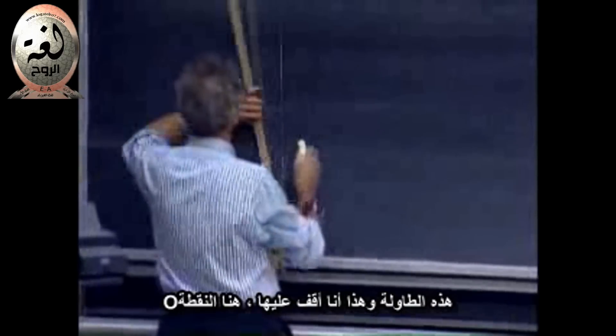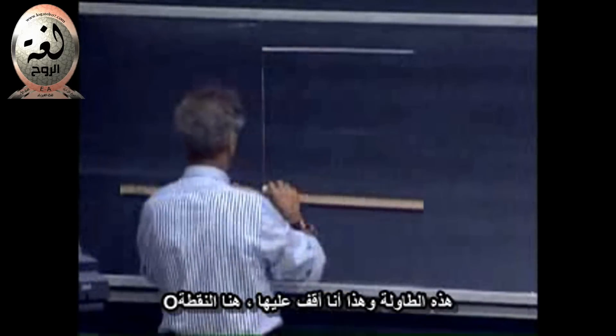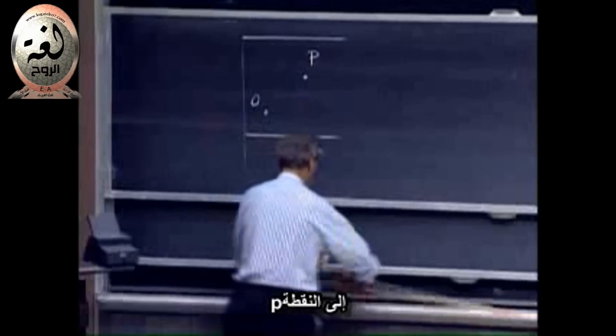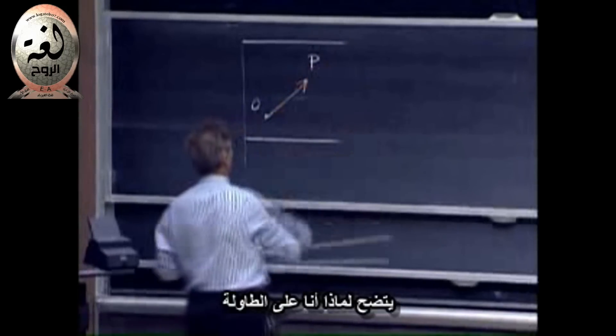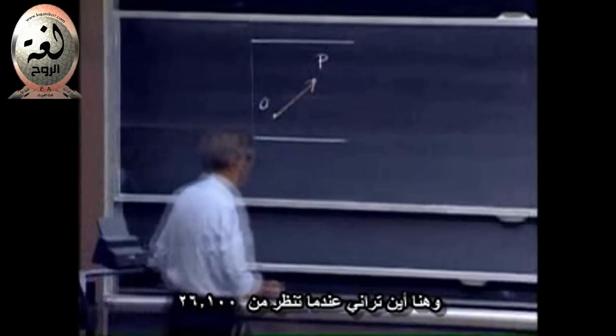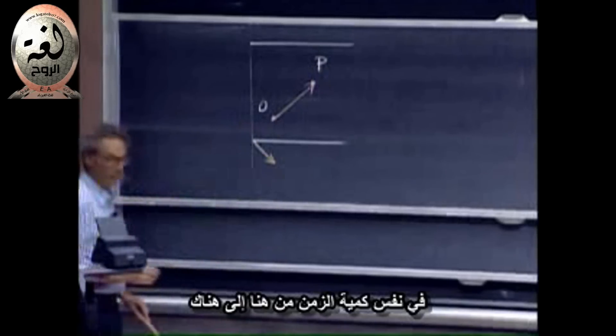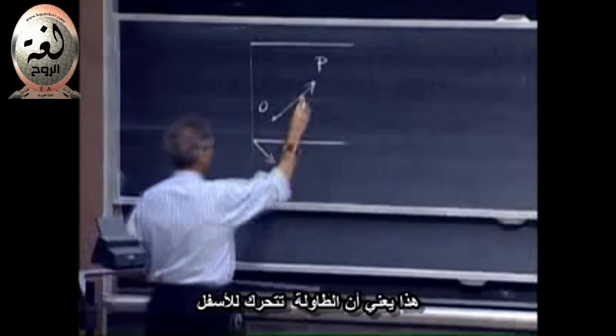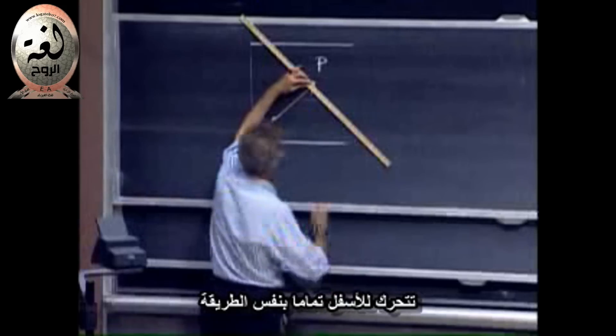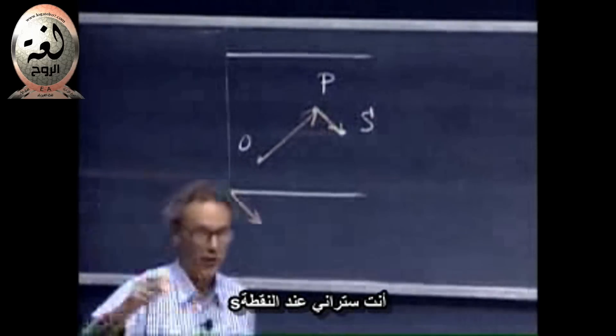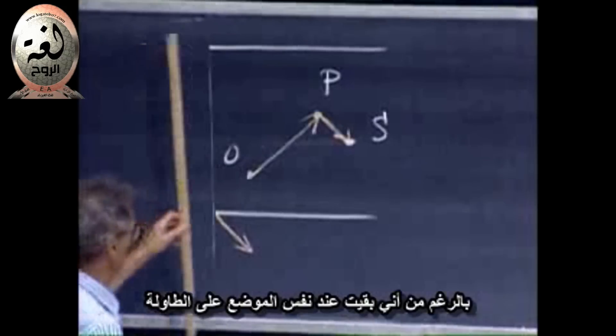Imagine that I'm standing on a table in 26100. This is the table, and I am standing at point O, and I move along a straight line from O to point P. So I move like so. So that's where I am on the table, and that's where you will see me when you look from 26100. It just so happens that someone is also going to move the table in that same amount of time from here to there. So the table will have moved down, and my point P will have moved down exactly the same way.